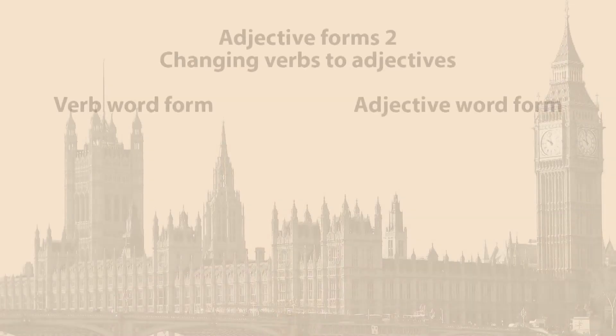As I told you before, some adjectives are formed by adding a suffix to the verb form. Do you remember? A suffix is a part added at the end of a word to mark a word form. Now listen and read common suffixes to form an adjective from a verb — pay attention to examples.